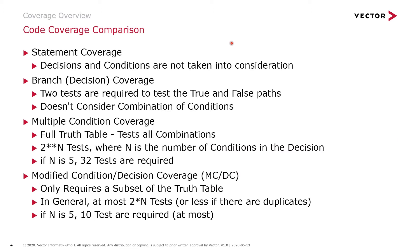Code coverage comparison: let's go over a few of the more popular ones and see how they compare to MCDC. With statement coverage, it just involves execution of all statements at least once and does not take into consideration decisions and conditions. Branch, which is decision coverage, requires two tests to test the true and false path, and doesn't consider combinations of conditions. With multiple condition coverage, it tests all possible combinations — the full truth table — so the number of tests would be 2 to the nth power where n is the number of conditions. If n is 5, 32 tests are required; if n is 4, 16 tests; n is 3, 8 tests, and so on.